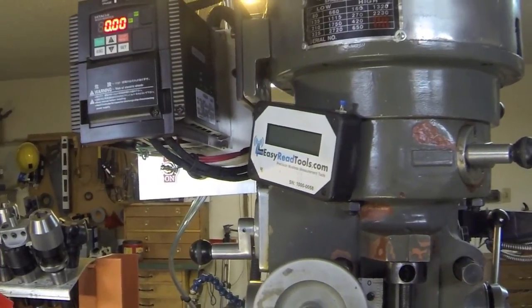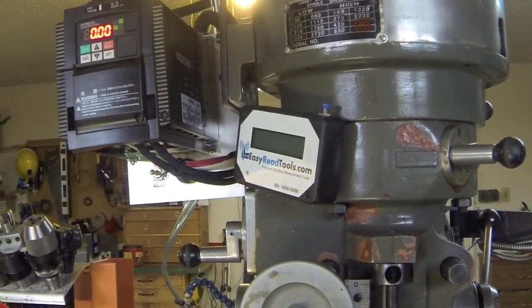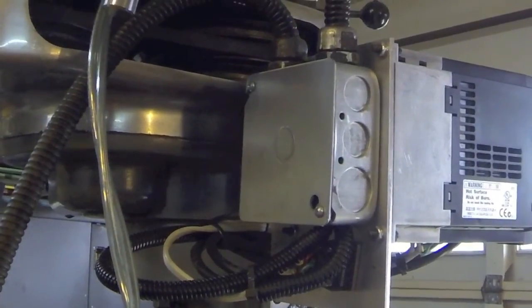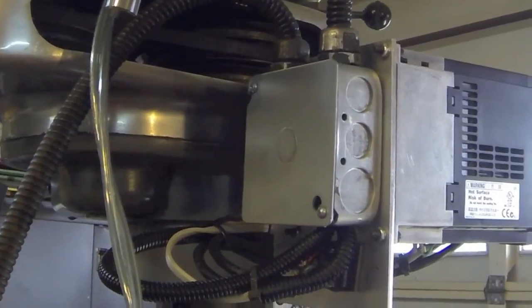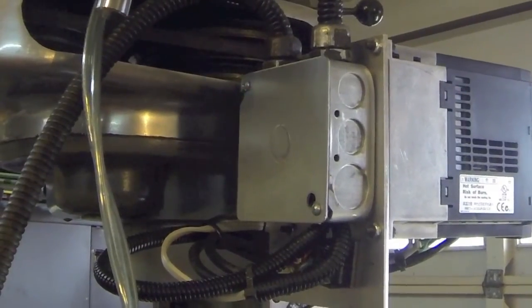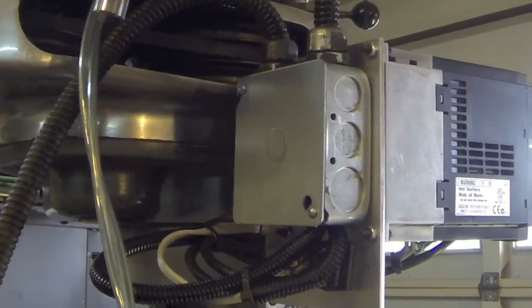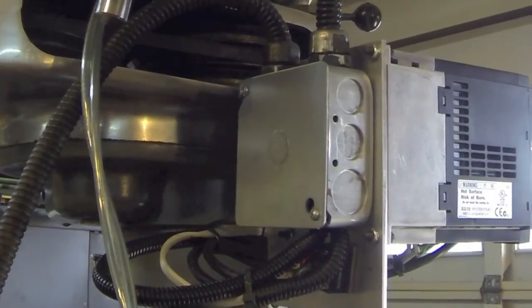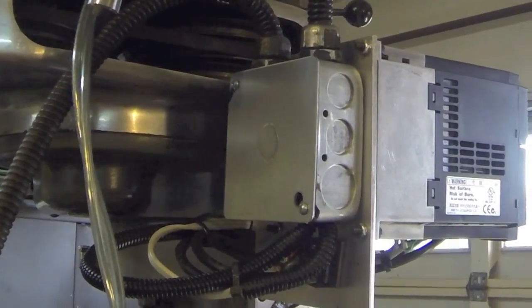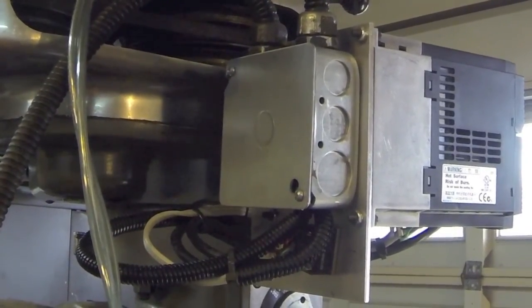So that's pretty well it. I'll show the back end here. Looks like it's going to work out real well. This is the back end of the VFD. I've got a quad box with the wiring coming into it. It's all the input wiring, the 240 in, then the motor wiring three phase out, and then down below is the wiring for the pot and the single pole double throw switch.